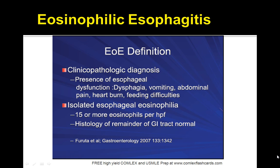This is a fairly new disease and so you may not have heard about it in medical school, but it's high yield for the boards. What happens in EoE is there is the presence of esophageal dysfunction — mainly dysphagia, vomiting, abdominal pain, heartburn, and feeding difficulties — and there's also isolated esophageal eosinophilia, 15 or more eosinophils. That's the key here: the presence of eosinophils on histology.